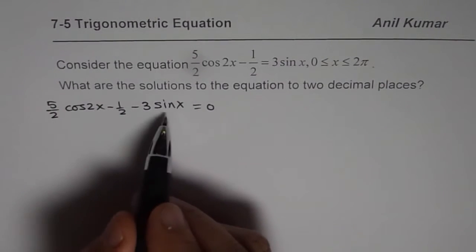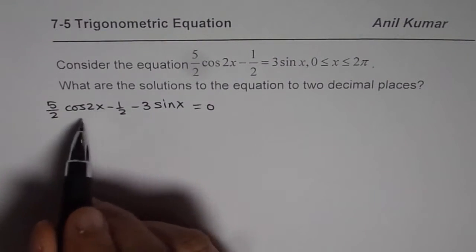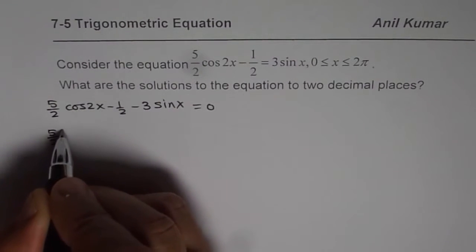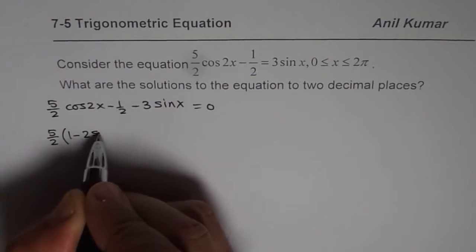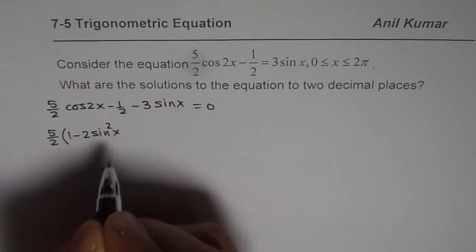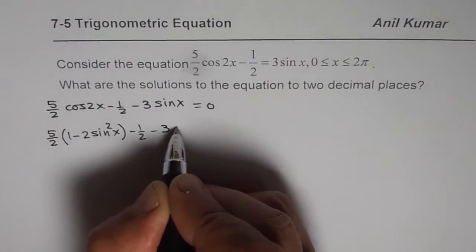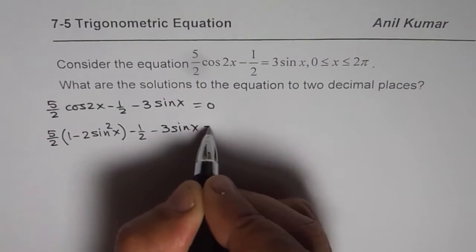cos(2x) should be written in sin²(x) form so that we get a quadratic equation. So we will write this as 5/2(1 - 2sin²x) - 1/2 - 3sin(x) equals 0.